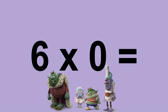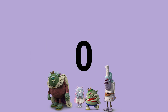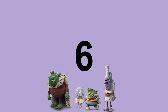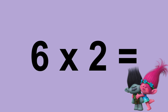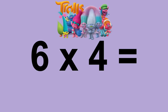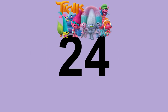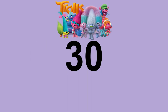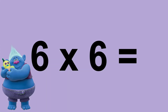Six times zero equals zero. Six times one equals six. Six times two equals twelve. Six times three equals eighteen. Six times four equals twenty-four. Six times five equals thirty. Six times six equals thirty-six.